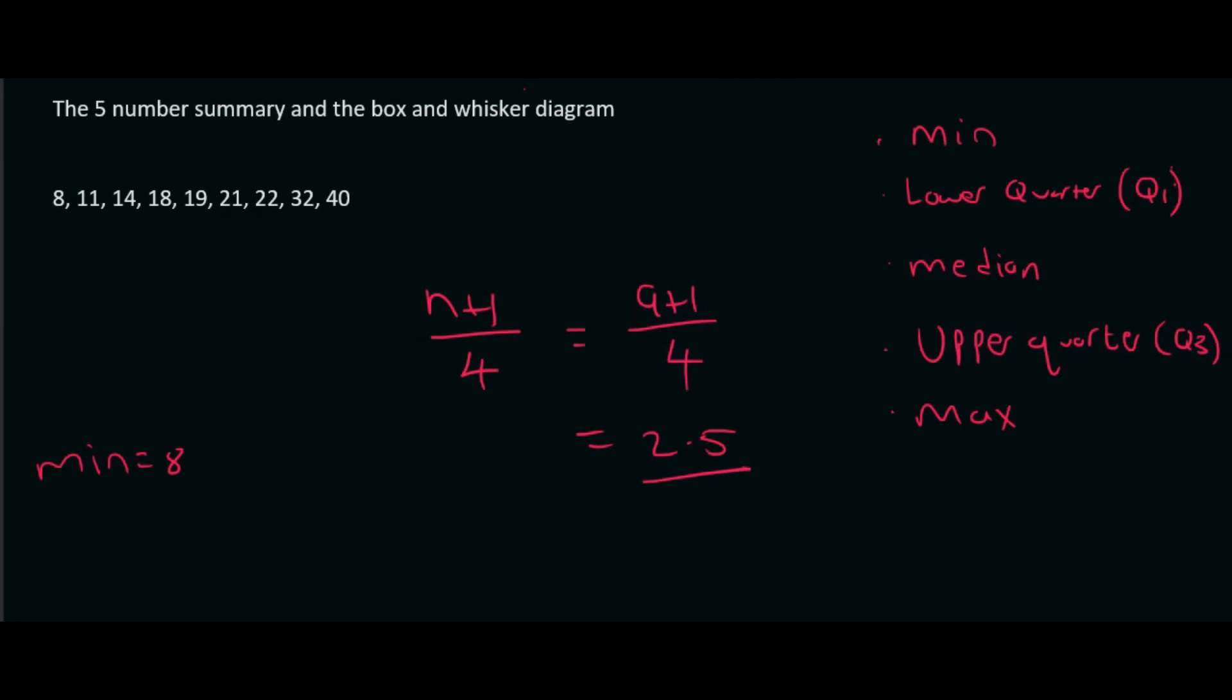So you go to position 2.5, which is somewhere between these two. So you say 11 plus 14, which is 25, divided by 2, which is 12 and a half. So Q1, which is your lower quartile, is 12 and a half.